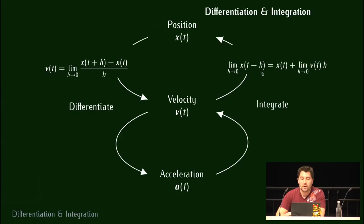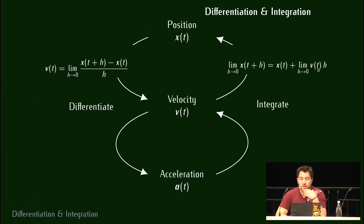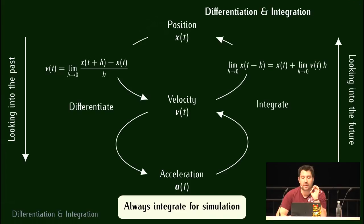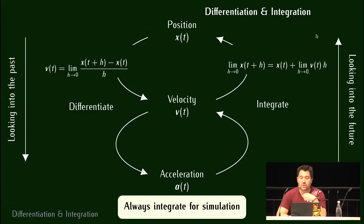En faisant quelques manipulations mathématiques, vous pouvez arriver à écrire que pour des temps de plus en plus petits, la position à un temps un peu décalé est égale à la position plus la vitesse fois ce temps. C'est vrai quand H devient de plus en plus petit, mais on peut s'en servir pour intégrer. Suivant si on dérive ou si on intègre, on va se rendre compte qu'on voit soit un peu dans le futur, soit un peu dans le passé. Quand on fait une dérivée, on va aller de plus en plus loin dans le passé. Si on intègre, on va aller de plus en plus dans le futur.